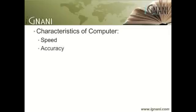Accuracy: Being a machine, a computer can do whatever it is programmed to do. Here accuracy means the correctness of the processed data. If the input data or the program is flawed, we get a flawed output. A computer does not do any processing on its own, but depends on the programs or commands that have to be provided to it to get a desired output.